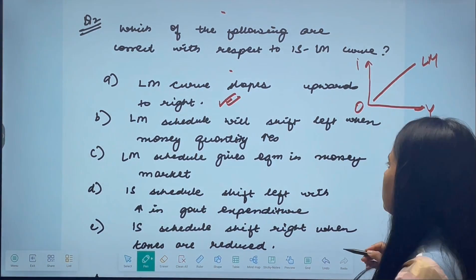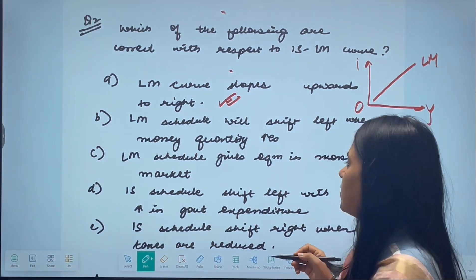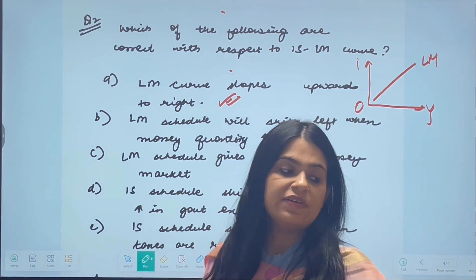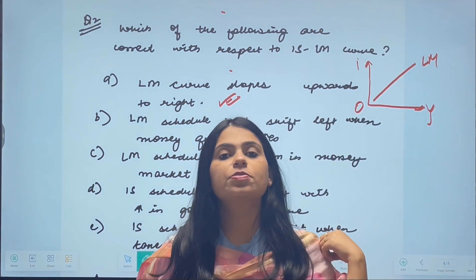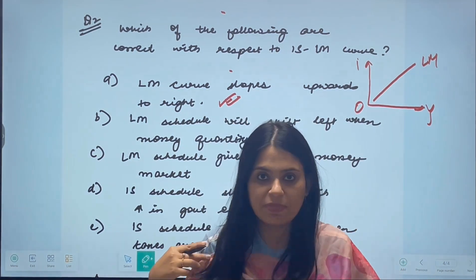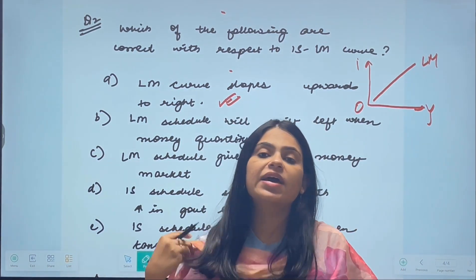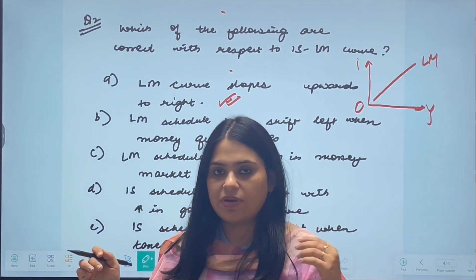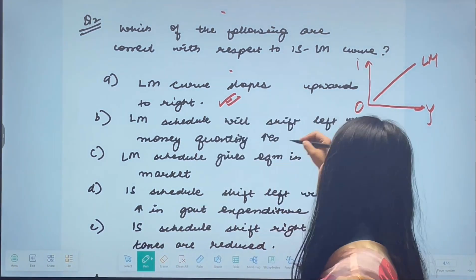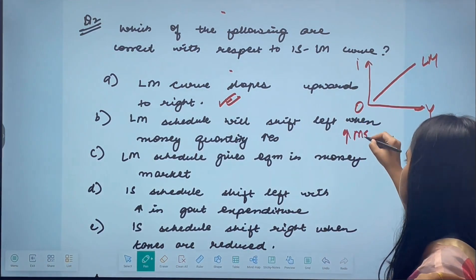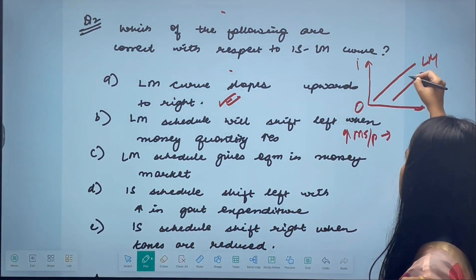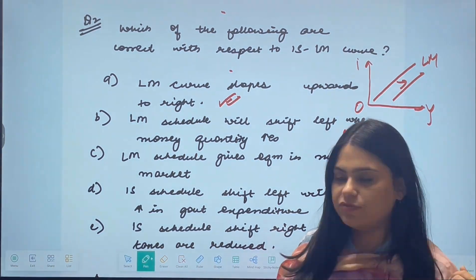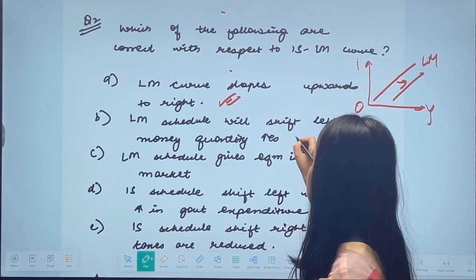The second option says the LM schedule will shift left when money quantity increases. This is incorrect. Whenever there is an increase in the quantity of money, the LM curve shifts to the right — rightward, not leftward. So this statement is incorrect.